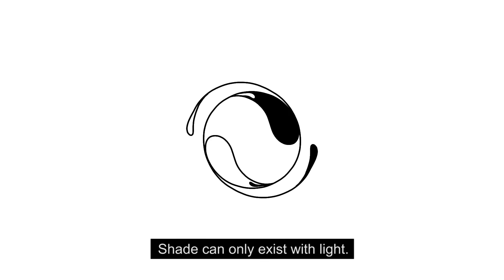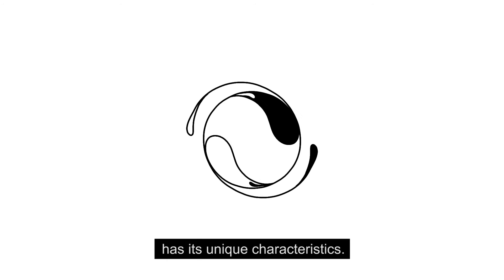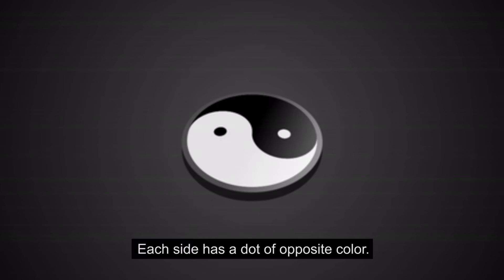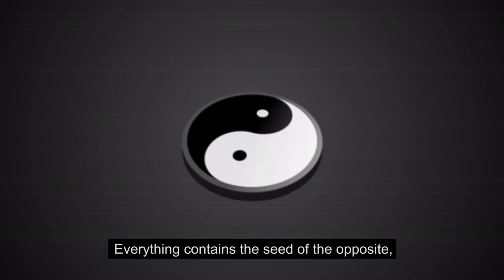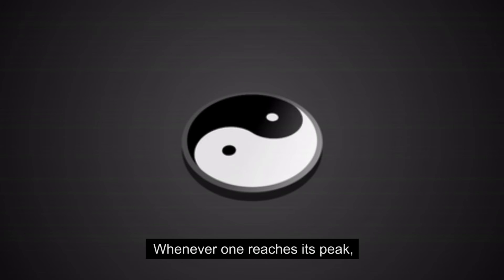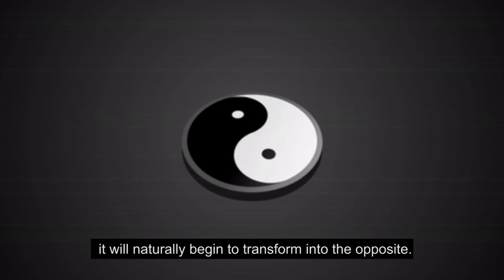Shade can only exist with light. Yin or Yang has its unique characteristics. Yin is the dark swirl, Yang is the white one. Each side has a dot of opposite color. Everything contains the seed of the opposite, so they create and transform into each other. Whenever one reaches its peak, it will naturally begin to transform into the opposite.